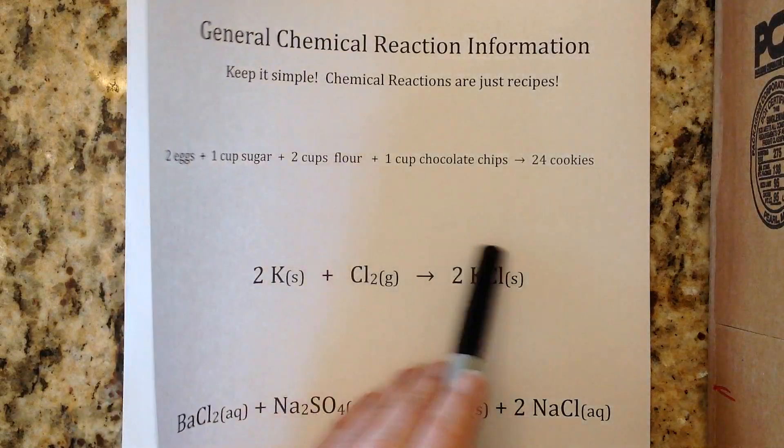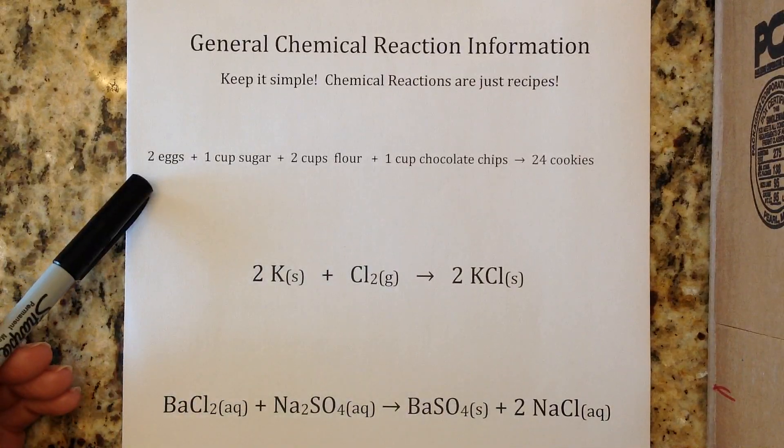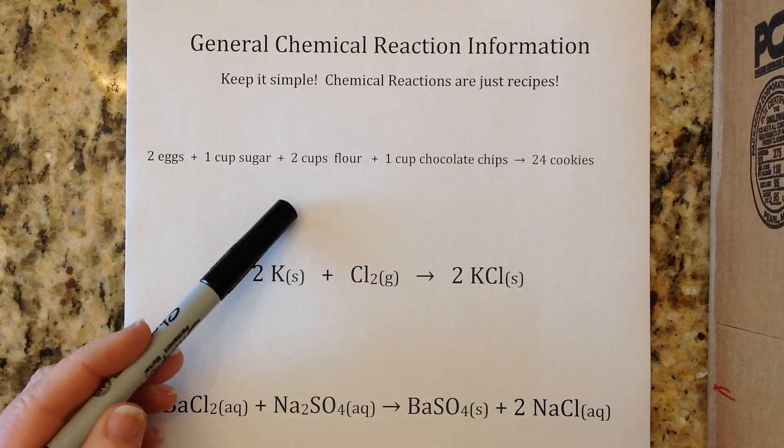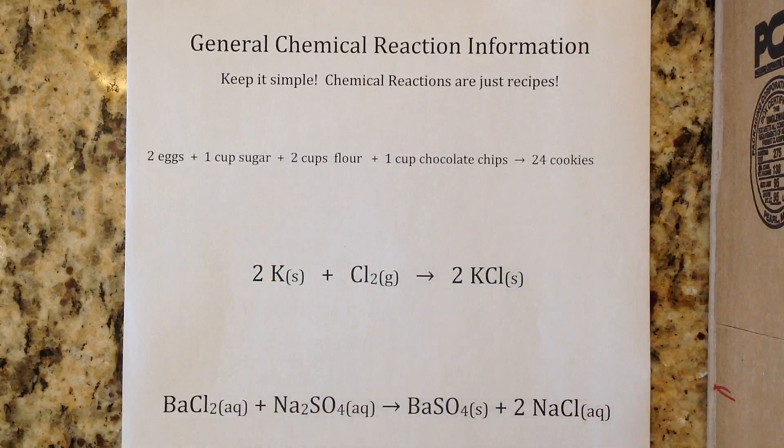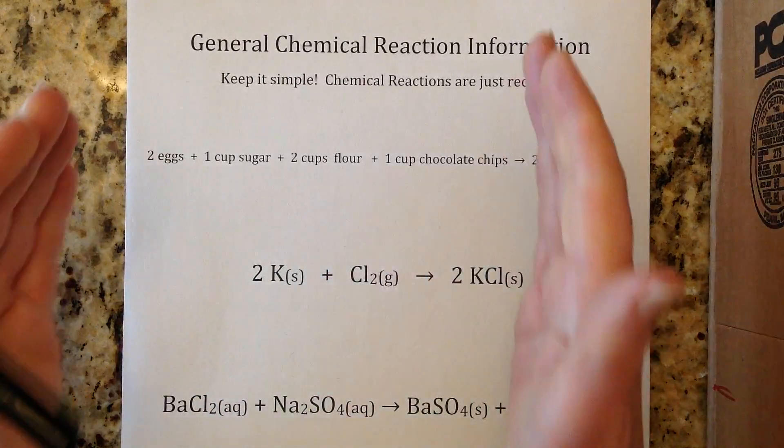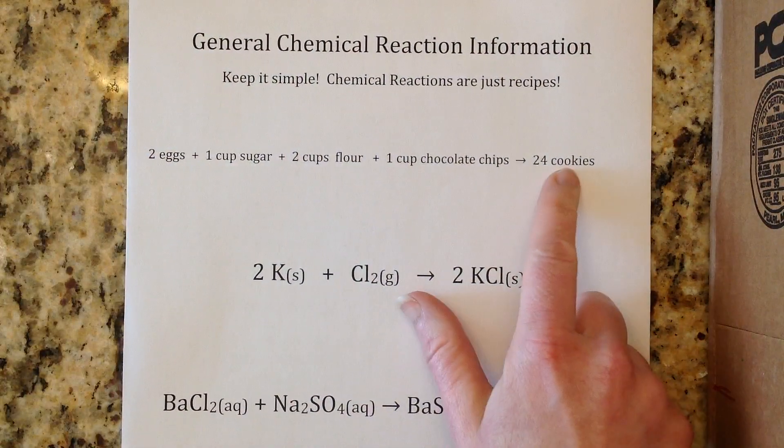For example, let's say you have a cookie recipe that calls for 2 eggs, 1 cup of sugar, 2 cups of flour, 1 cup of chocolate chips, and that yields 24 cookies. You have all of your ingredients - these are your reactants - and then you have your products, what you're making.